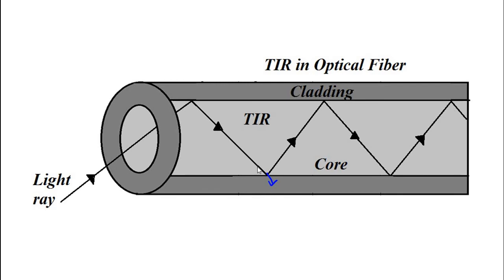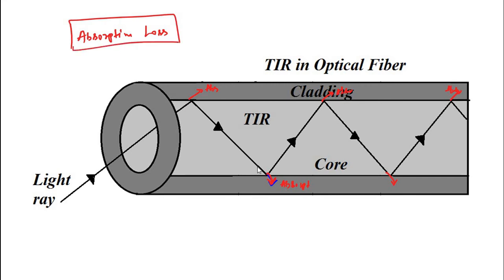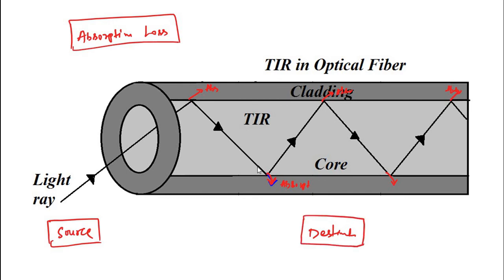Some portion of light travels into the cladding and undergoes absorption. With each strike to the cladding, some absorption loss occurs. As a result of absorption loss — and there are also other different losses which we will discuss — at the destination, the intensity of light is not the same as it was at the source. Different signal processing circuitry is used at the destination to enhance the quality of the signal. This is one such optical phenomenon which leads to reduction in the quality of signal propagation.